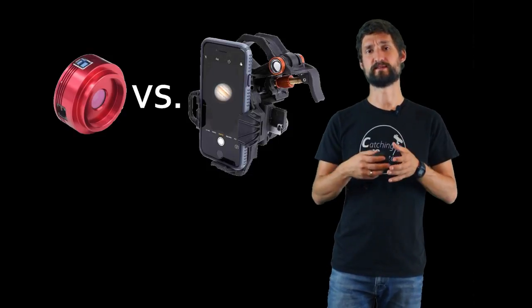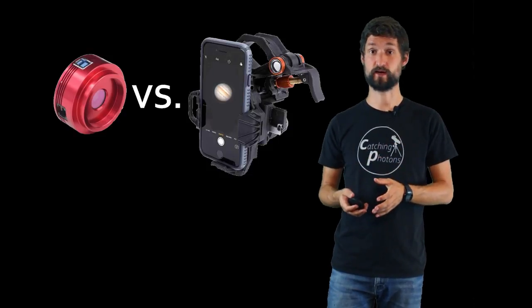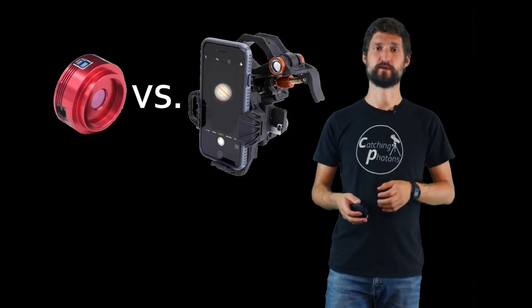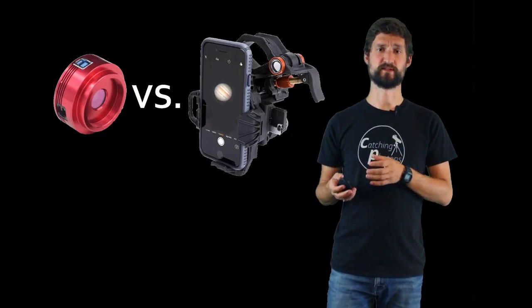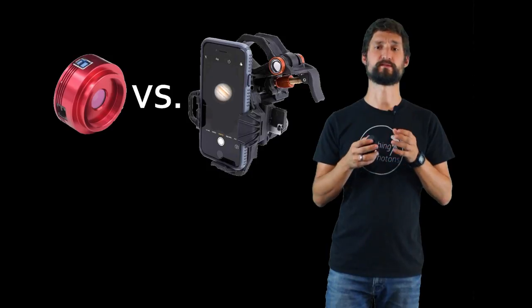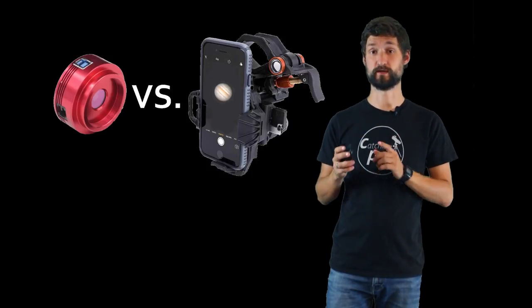So we imaged the rings of Saturn and the big red dot of Jupiter. But let's move on from the binoculars to the telescope. The main question was, how does the smartphone in front of an eyepiece compare against a dedicated astro camera on prime focus? For further explanations about the different camera attachment methods and the theory behind it, I got you covered.